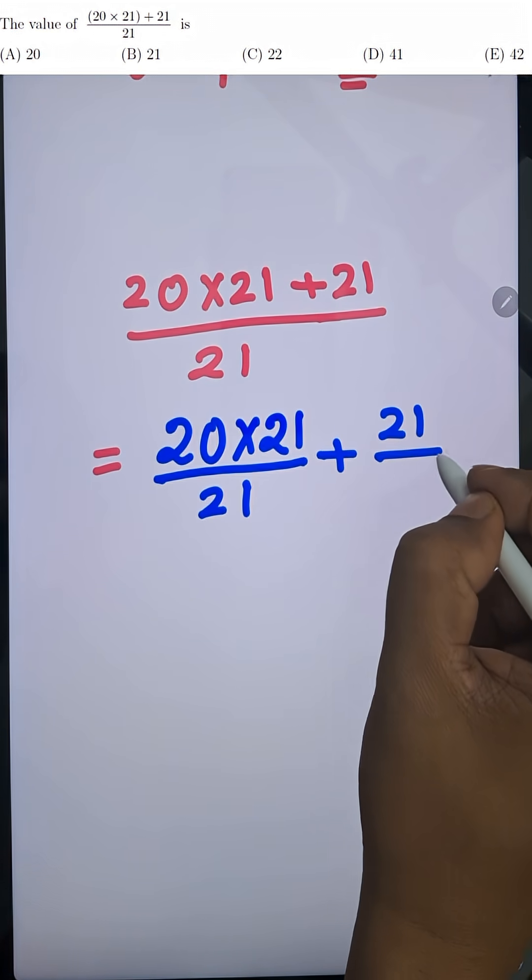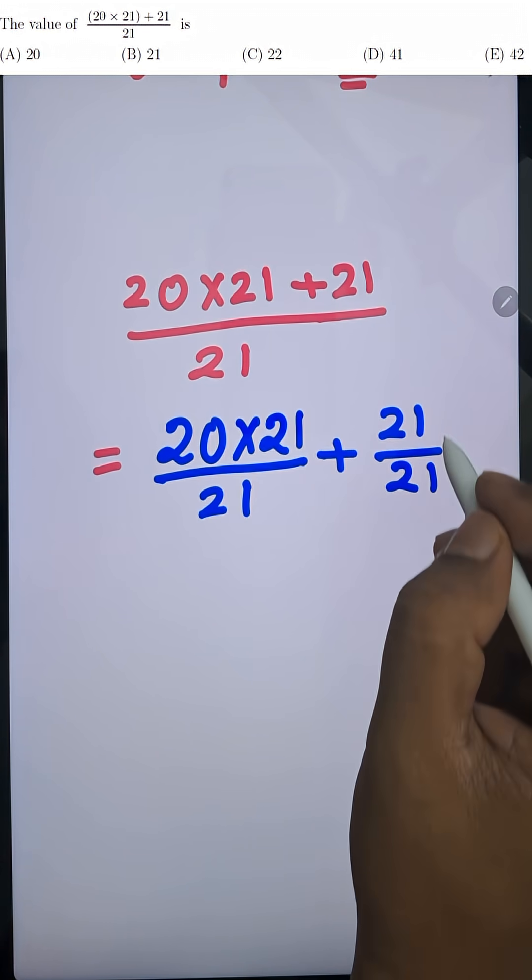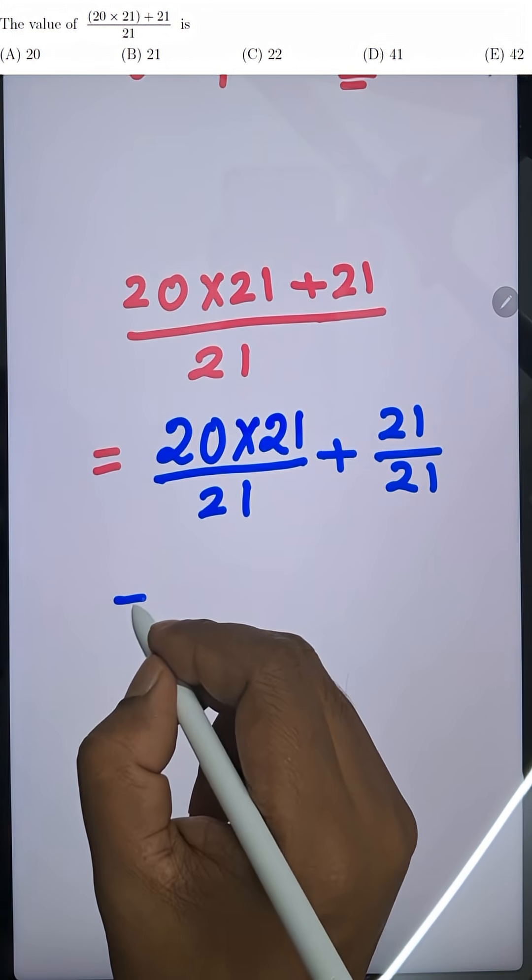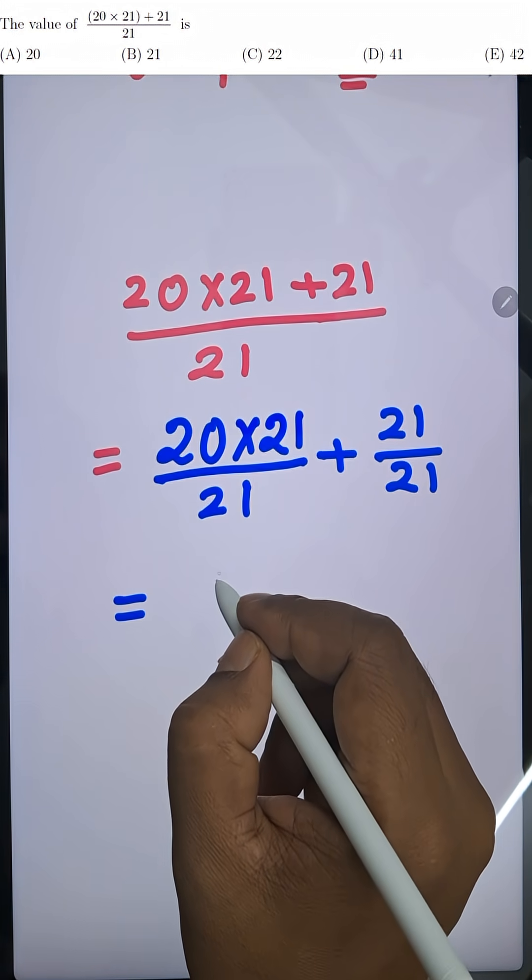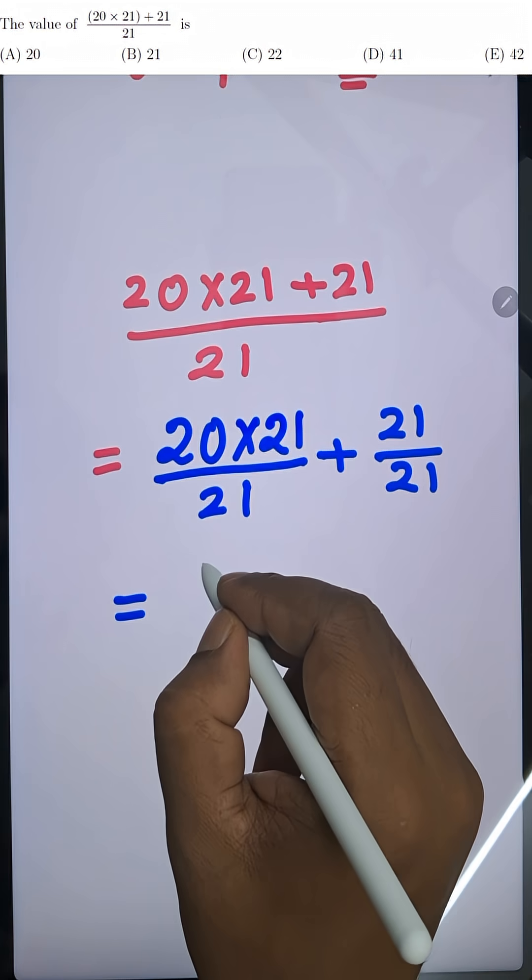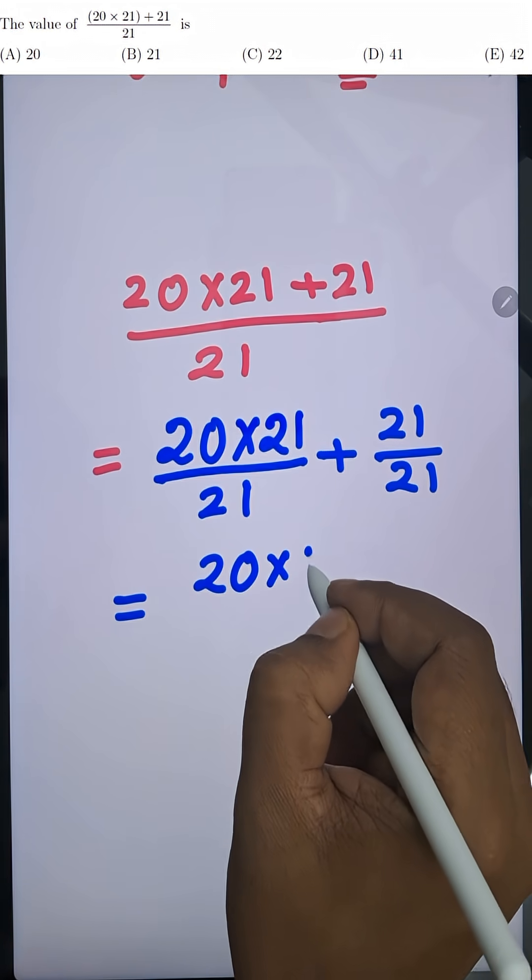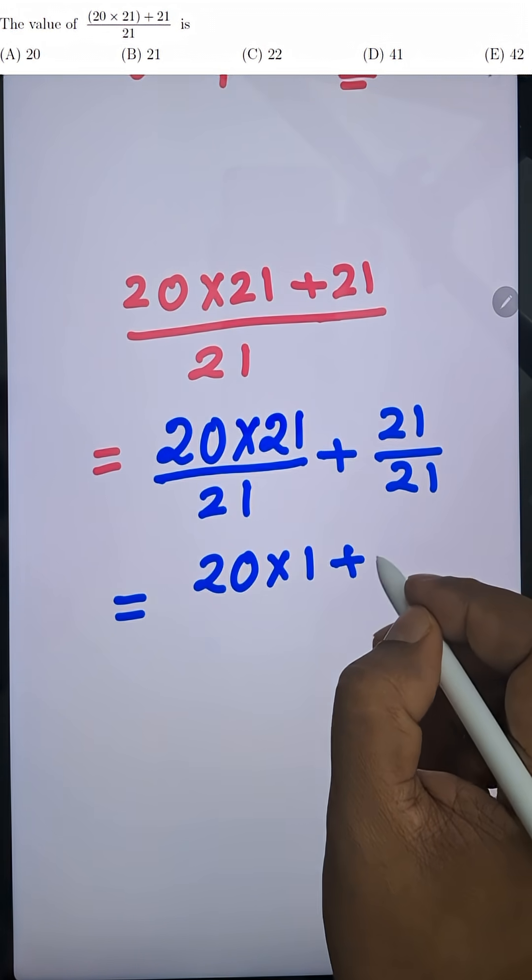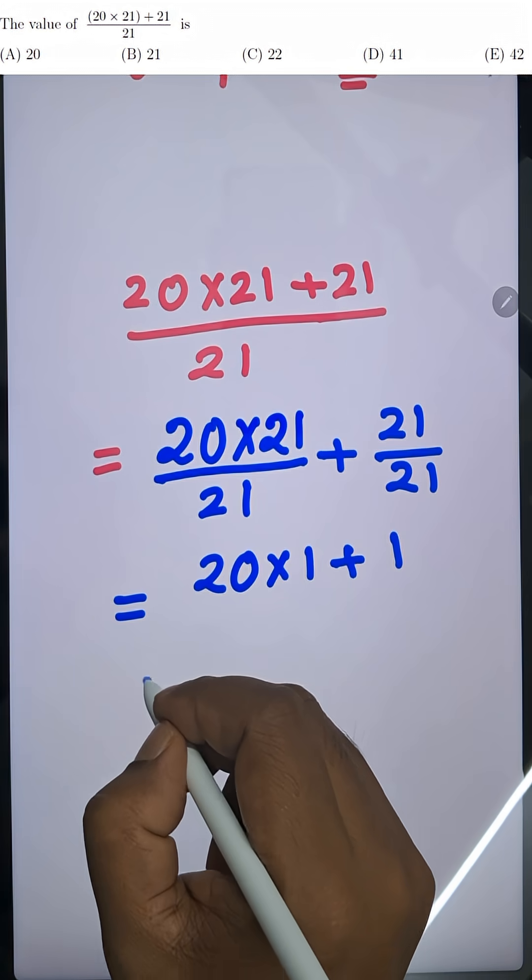Now simplify each part. 21 by 21 becomes 1. So this becomes 20 into 1 plus 1, which is simply 20 plus 1. And that gives us 21.